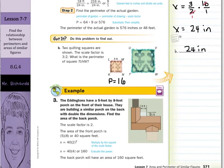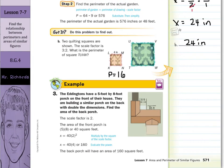My third example now. The Eddingtons have a 5 foot by 8 foot porch on the front of their house. They're building a similar porch on the back with double the dimensions. Find the area of the back porch. Well, double the dimensions means we're going to have a scale factor of 2. The area of the front porch is 5 times 8, which is 40. And the way we're going to do this now is we're going to take that scale factor and square it before we multiply by the original area. So 2 squared is 4, and 40 times 4 is 160.